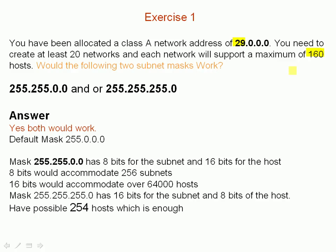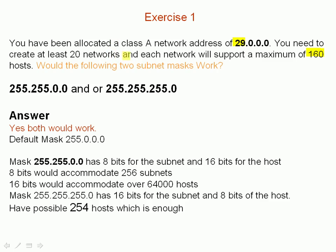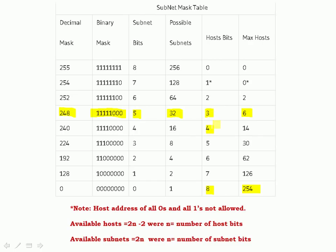Let's go back to our table. We need 160 hosts — looking at the table we see 254, we need 8 host bits. For 20 subnets, we need 32 possible subnets, so we need 5 bits for the subnet. So that's 5 bits for the subnet and 8 bits for the host.